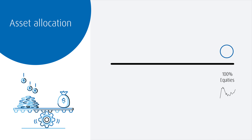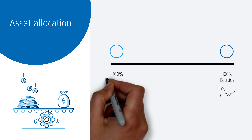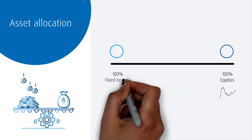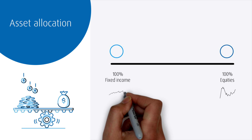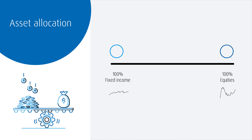If you only invested in fixed income investments, then your portfolio would have a 100% allocation to fixed income or bonds. The portfolio may not be very volatile at all, but at the same time, the potential return on your money invested would also be expected to be relatively low.